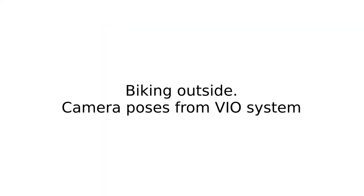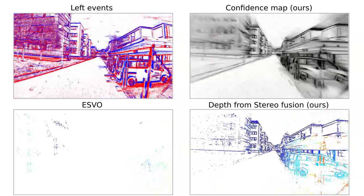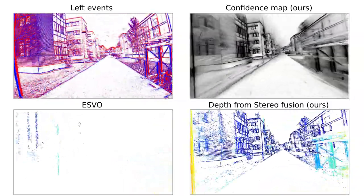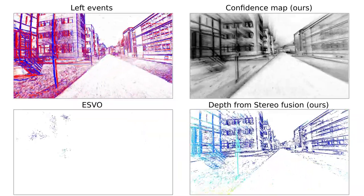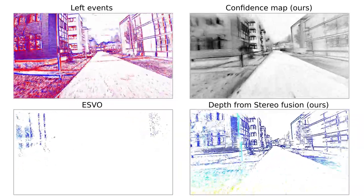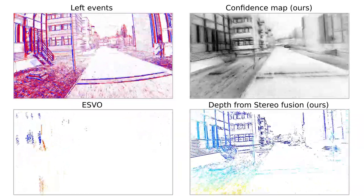Here, the camera rig moves outdoors on the street. Our method is able to recover cars, buildings and trees remarkably well while ESVO struggles due to the high spatial resolution of the cameras.